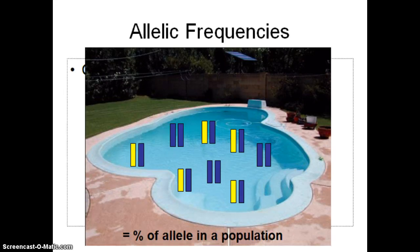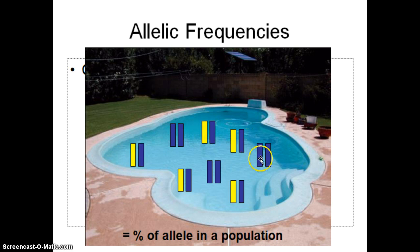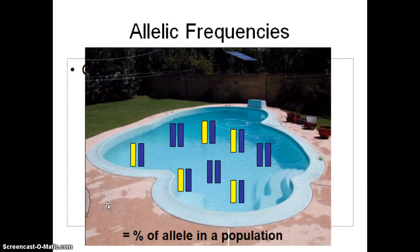Allele frequencies are the percentage of alleles in a population. We can actually just count these up. So if we count all the alleles — 1 through 16 — that would be our denominator. And then counting just one type of allele gives us 5. So 5 divided by 16 would be the percentage of that allele in the population. The allele frequency is defined as the percentage of an allele in a population.